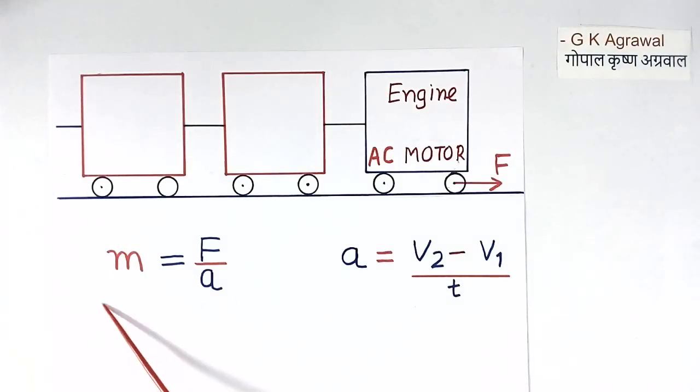Here I have shown those two formulas again: mass and acceleration. This is a train having one electrical engine which has an AC motor.